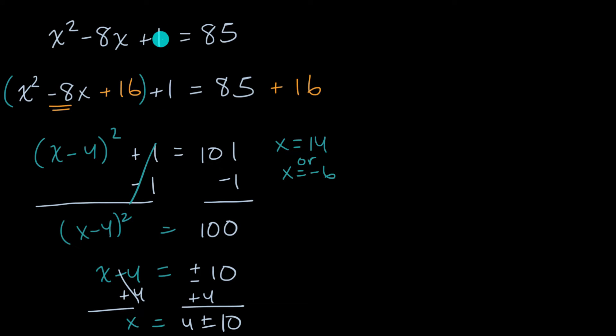We could, right from the get-go, try to subtract 85 from both sides. Some people feel more comfortable solving quadratics if they have the quadratic expression be equal to zero. And if you did that, you would get x squared minus 8x minus 84 is equal to zero. All I did is I subtracted 85 from both sides of this equation to get this right over here.